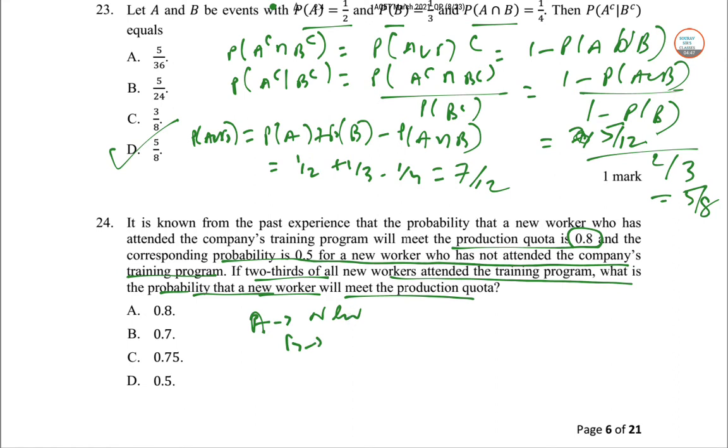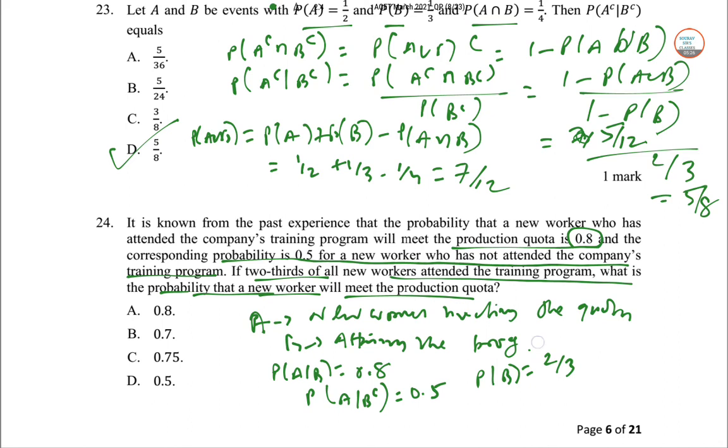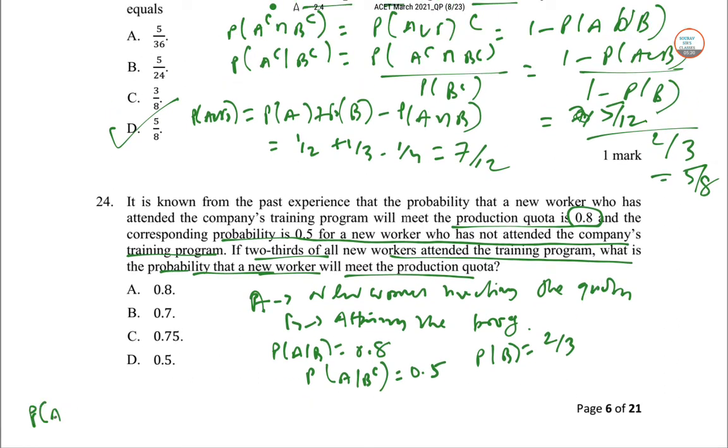And this is attending the program. So P of A intersection B kya hai 0.8. A intersection B complement, this is not happening, so 0.5 is the other way. P(B) itself how much is it? 2 by 3. So we start with P(A). So P(A) what do we do? P of A intersection B by P(B) plus P of A intersection B complement into P of B complement.